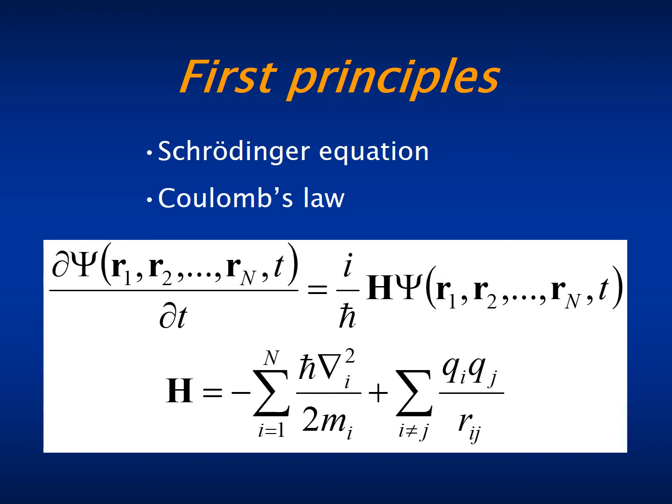First principles methods intend to predict the properties of molecules and materials starting from just Schrödinger's equation to describe the evolution of the system and Coulomb's law to describe the interaction between the particles.